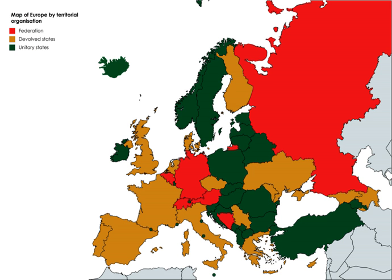Nigeria's 36 states include Abia, Adamawa, Akwa-Ibom, Anambra, Bauchi, Benue, Borno, Cross River, Delta, Ebonyi, Enugu, Edo, Ekiti, Gombe, Imo, Jigawa, Kaduna, Kano, Katsina, Kebbi, Kogi, Kwara, Lagos, Nasarawa, Niger, Ogun, Ondo, Osun, Oyo, Plateau, Rivers, Sokoto, Taraba, Yobe, and Zamfara, plus the Federal Capital Territory. There has been significant tension between the southern and northern states due to financial inequality, ethnic differences, and religious conflict. Religious conflict has led to the rise of Boko Haram, a violent Islamist militant group. The Nigerian government has often been accused of being a northern-dominated government that seeks to exploit the south.